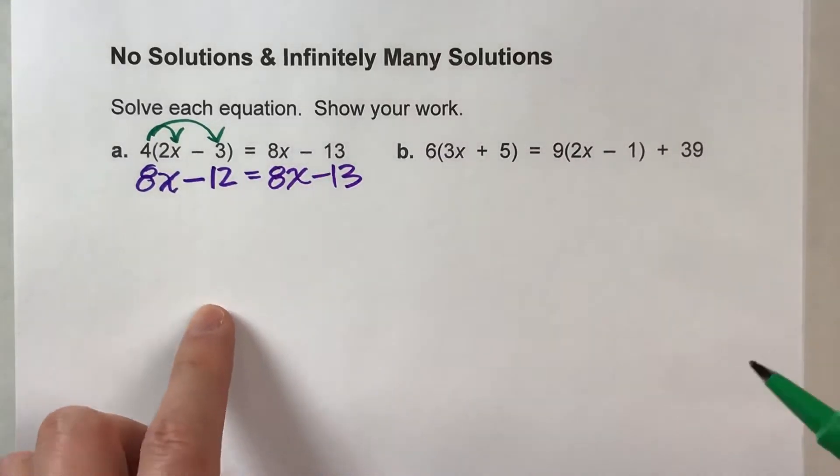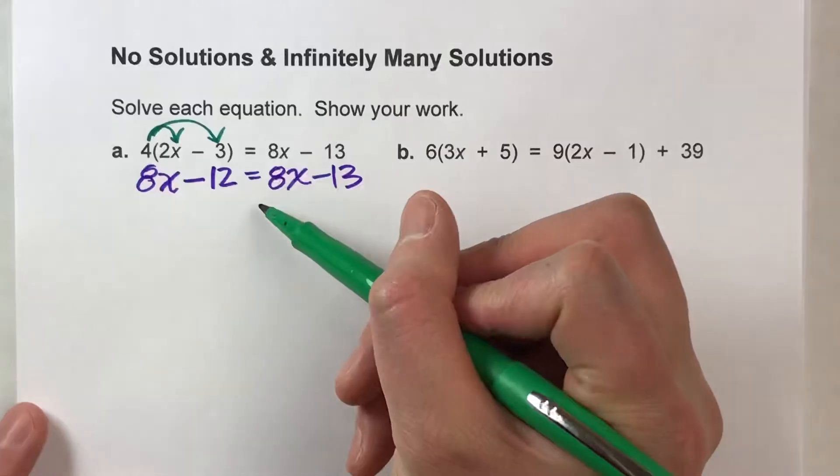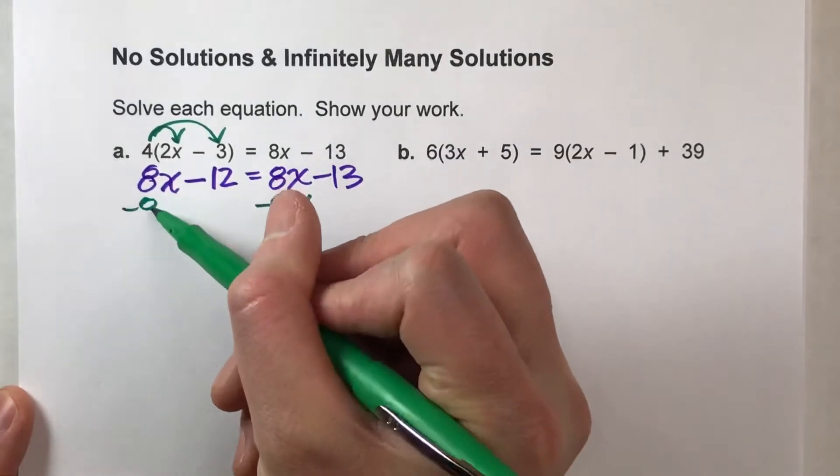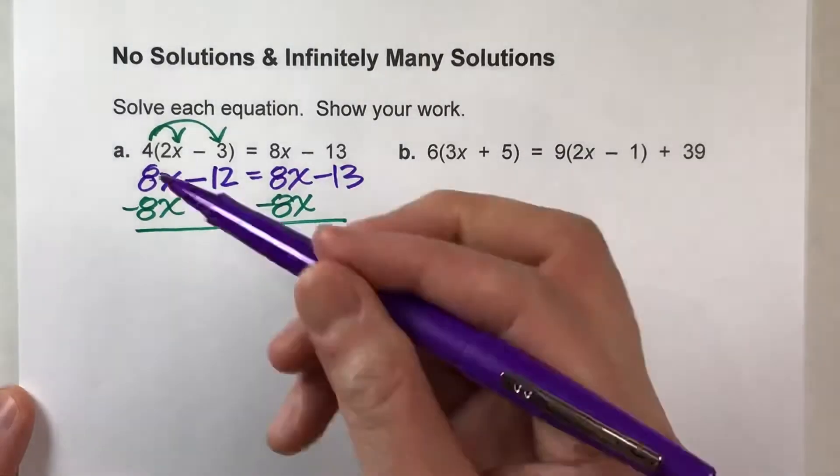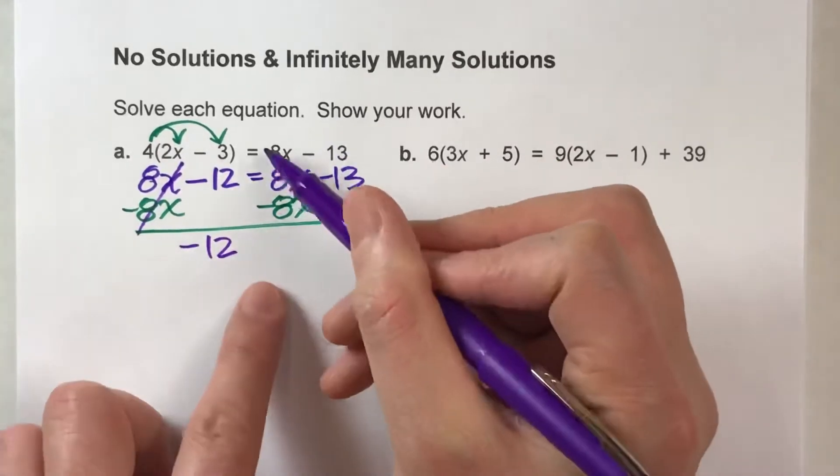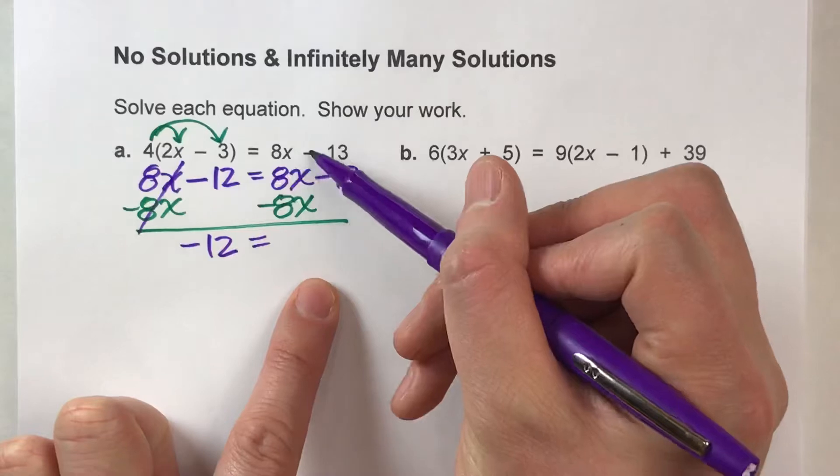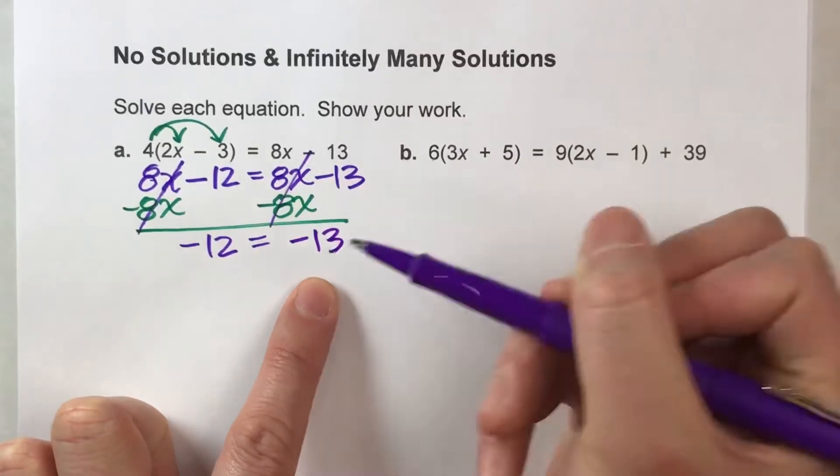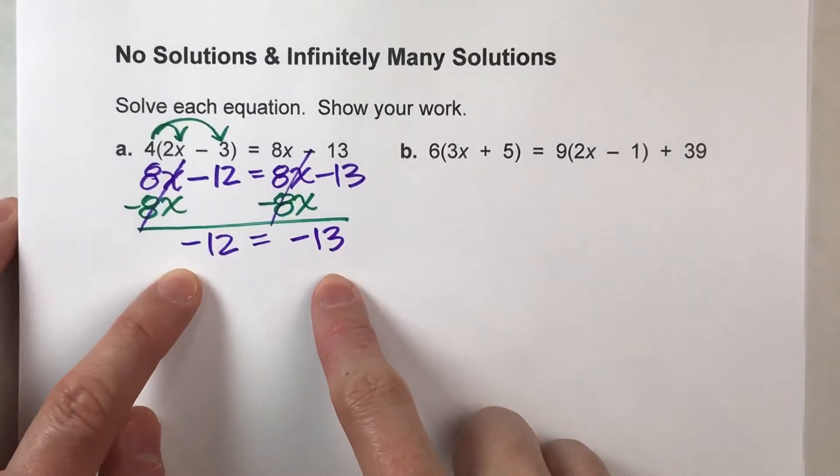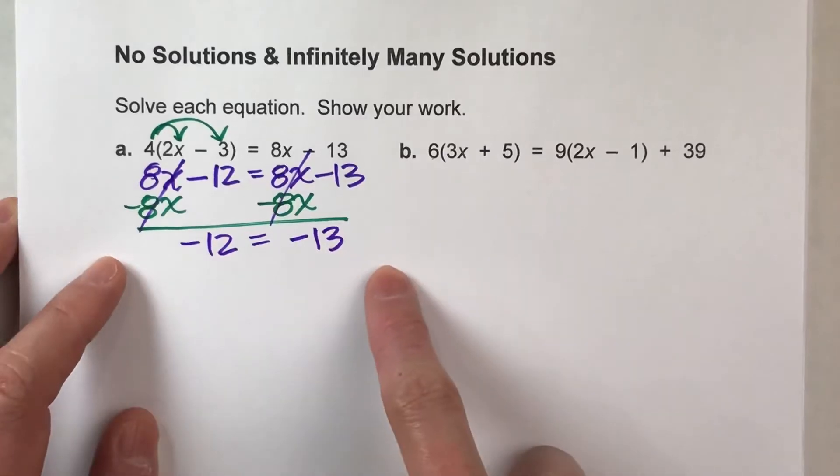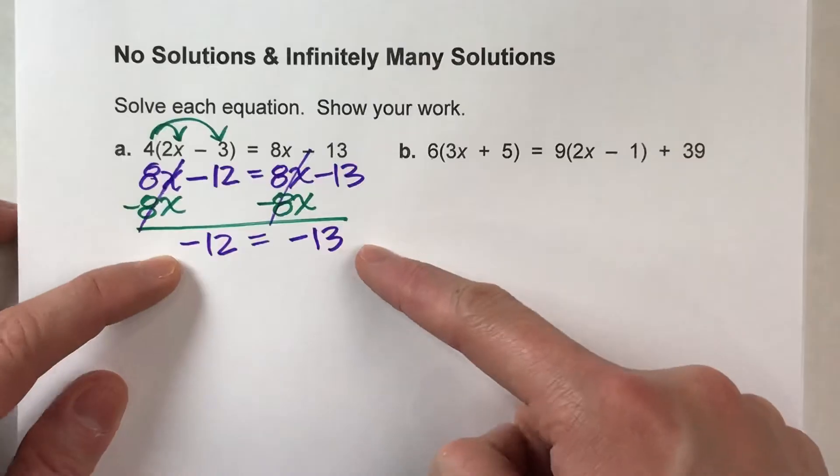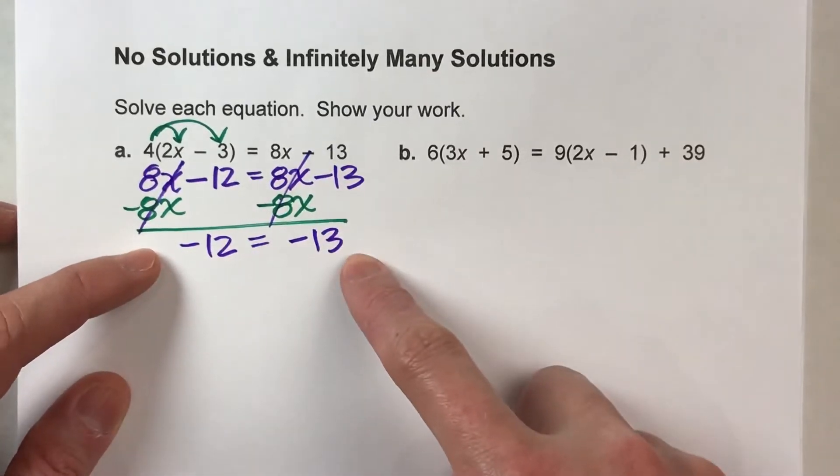All right, so I've got x's on both sides of the equal sign. So I'm going to subtract off all the x's off this side. But what I do to one side, I have to do to the other. So when I do that, the 8x's undo each other. Here, we end up getting negative 12. The equals drops down. On the other side, the 8x's undo each other. And negative 13 drops down here. Notice what we end up having at this point. We have no x's in our equation. So we have nothing to solve for now.